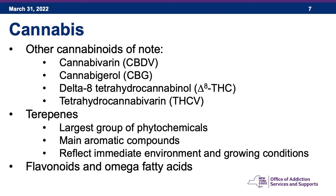Delta-8-tetrahydrocannabinol, or delta-8-THC, is 20% less active than delta-9. And there's tetrahydrocannabivarin, or THCV, which is an interesting compound because it has been used in research studies to distinguish THC that came from using cannabis versus THC that came from medications.